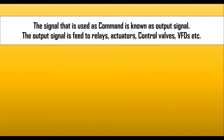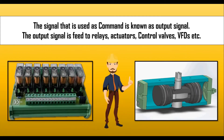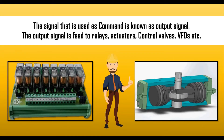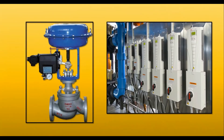In an instrumentation system, commands are output signals. The output signal is provided to relays, pneumatic actuators, pneumatic control valves, and variable frequency drives, etc. Here relay and actuators are shown in the picture. Examples of output signals include control valve and variable frequency drive.